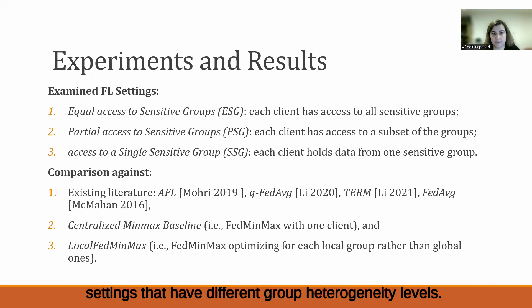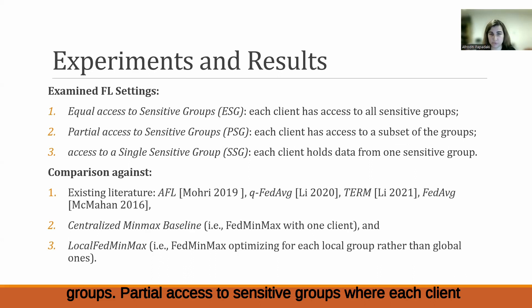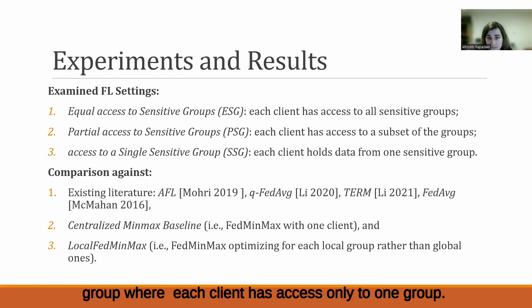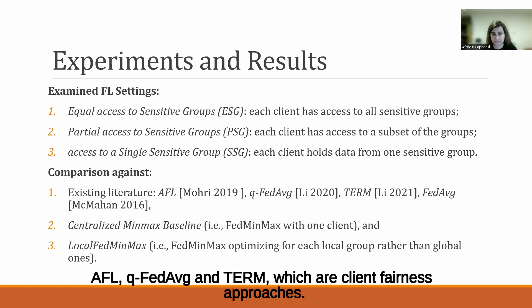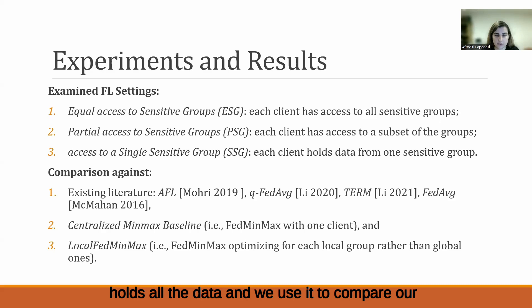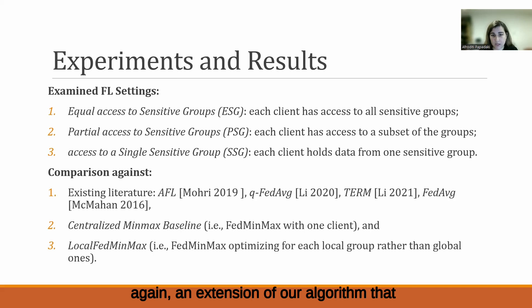We run experiments in three federated learning settings with different group heterogeneity levels: equal access to sensitive groups, where all clients have access to all sensitive groups; partial access to sensitive groups, where each client holds only a subset of groups; and access to a single sensitive group, where each client has access only to one group. The federation consists of 40 clients, and we benchmark our work against AFL and Q-FedAvg, which are client fairness approaches, and use Federated Averaging as a baseline. We also develop a centralized MinMax baseline and a local FedMinMax variant that optimizes for each local group rather than global ones.